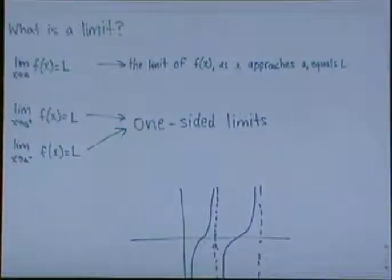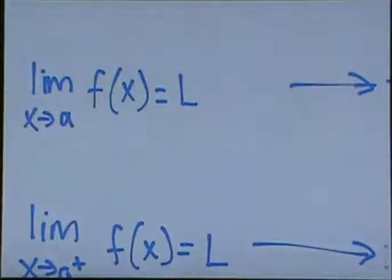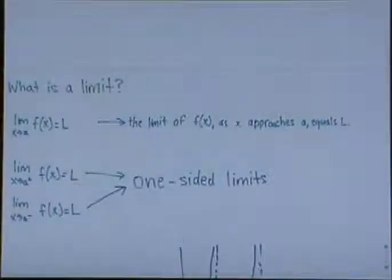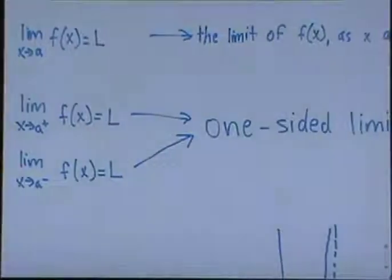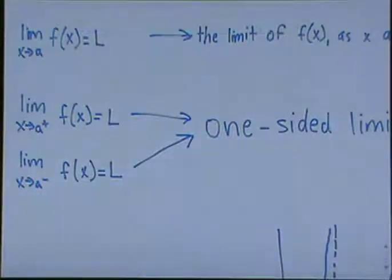What is a limit? Well, the limit of x approaching a of f of x is equivalent to L. So if a function approaches a, it'll become L. You can also do it one-sided. So x approaching a from the plus side would be from the right side, or the positive side, and a minus would be the left side, or the negative side.